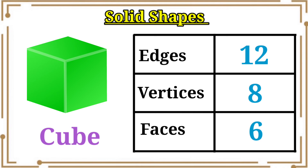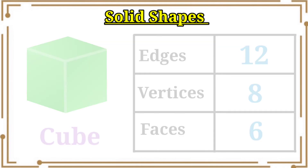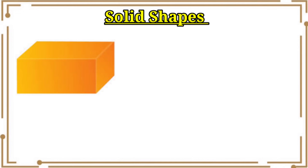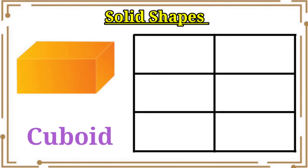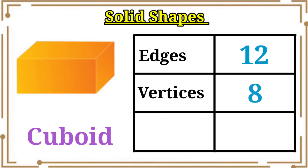Let's see the next solid shape. Cone. Then this name is cuboid. Cuboid has twelve edges, eight vertices, and six faces.